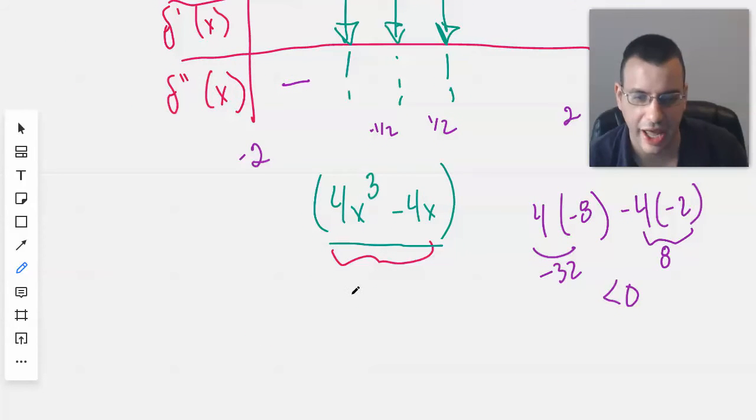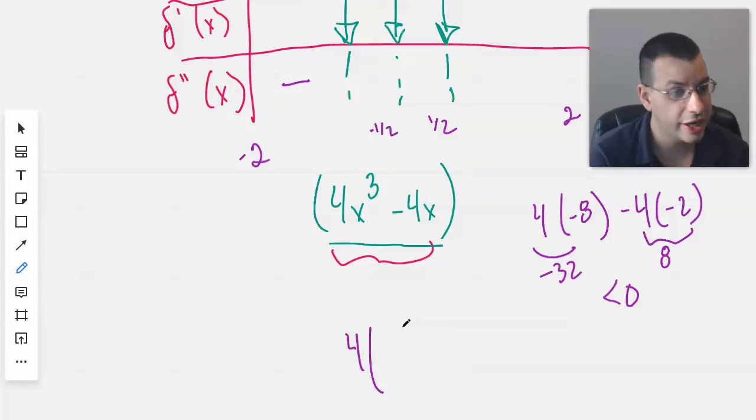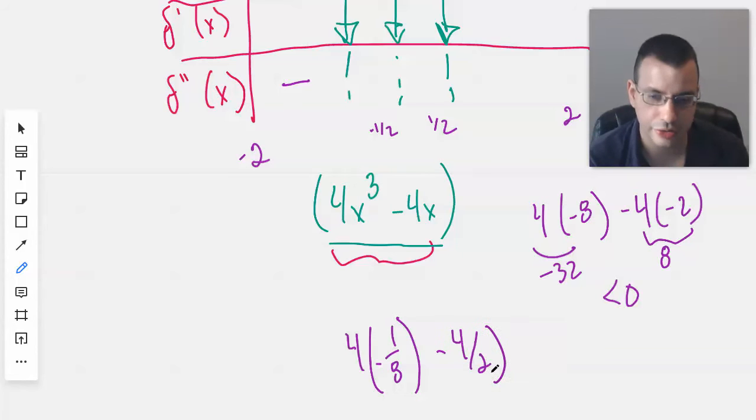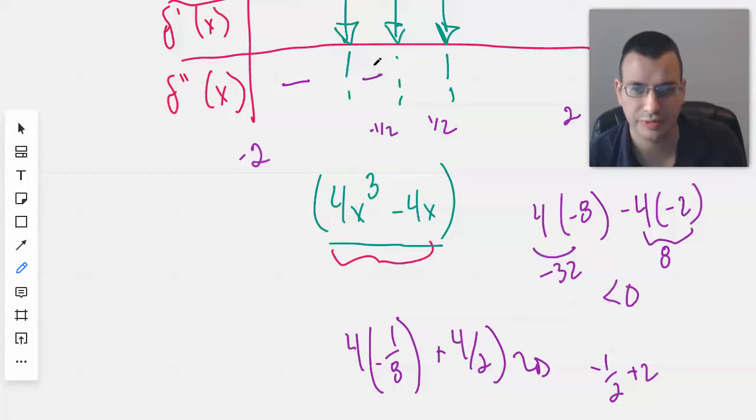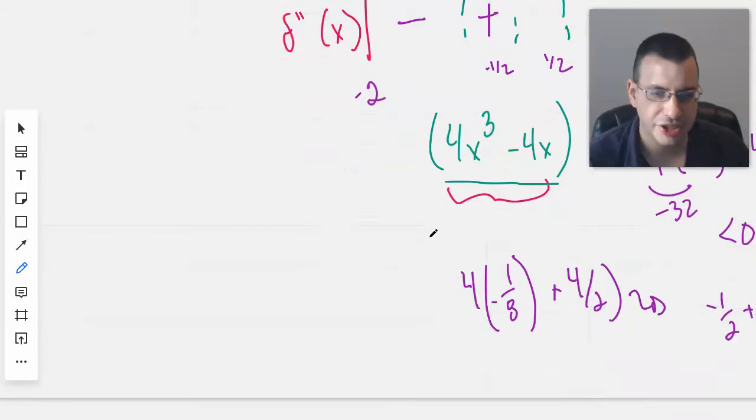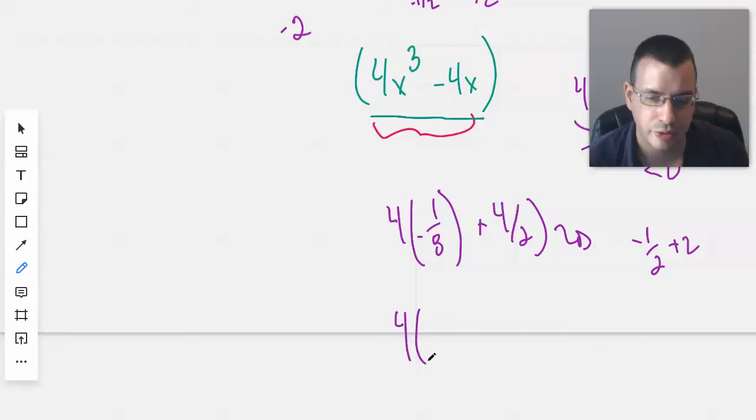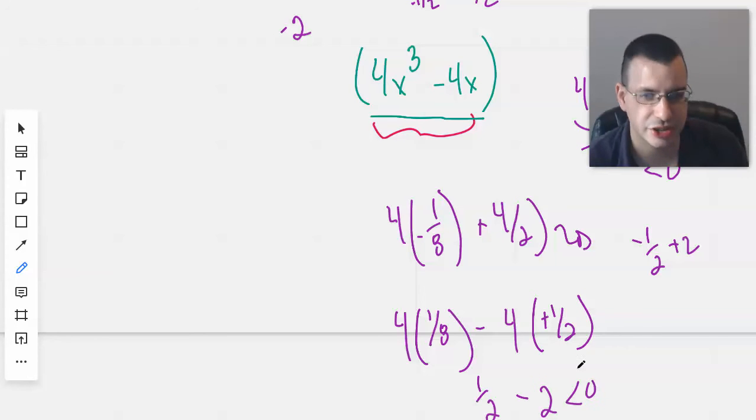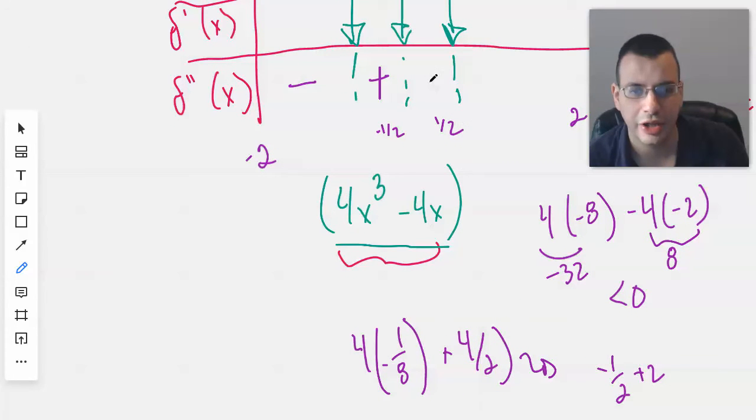Plug in -1/2: 4(-1/2)^3 = -1/2, minus 4(-1/2) = +2. So -1/2 + 2 > 0, this is positive. Plug in +1/2: 4(1/2)^3 = 1/2, minus 4(1/2) = -2. This gives us 1/2 - 2 < 0, which is negative.